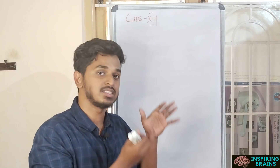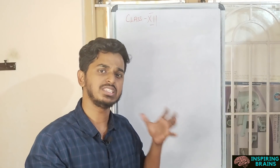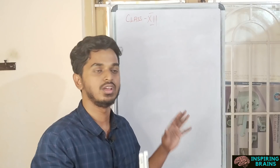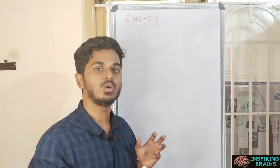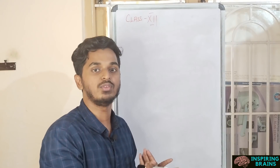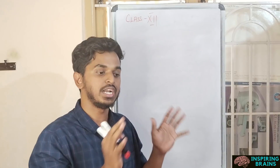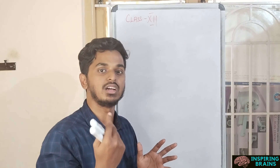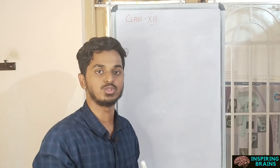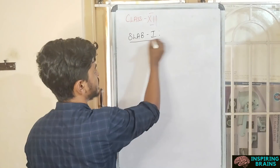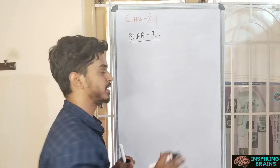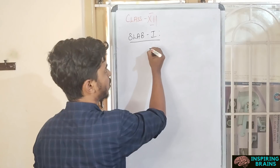I've segregated the chapters into Slab 1 and Slab 2. Slab 1 is easier — anyone can study it with some effort and hard work. Slab 2 requires more hard work in physics. If you've already studied chemistry and biology, Slab 2 will be easier. For Slab 1, start with Modern Physics, which is considered easy.